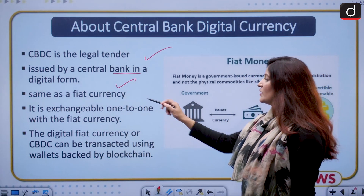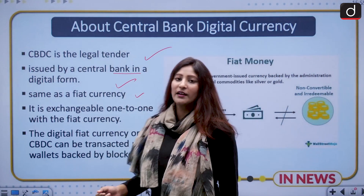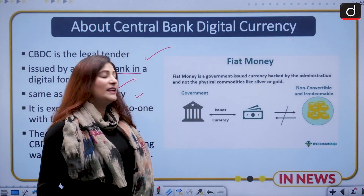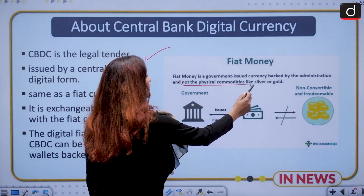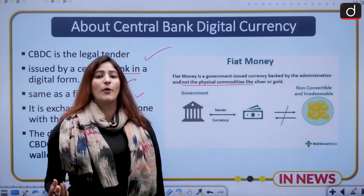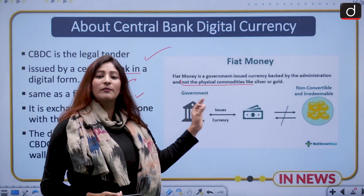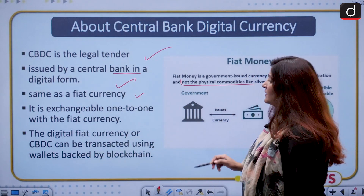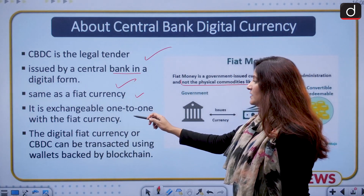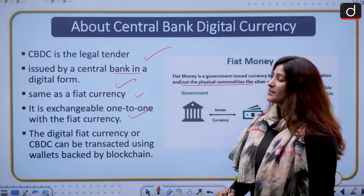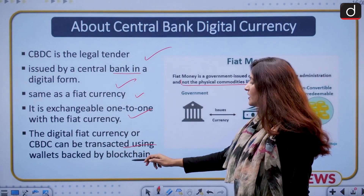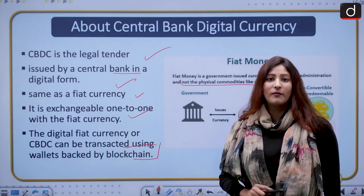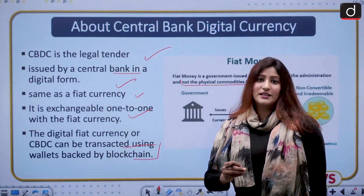CBDC is the same as fiat currency. Fiat money is a government-issued currency backed by the administration, not by a physical commodity like gold or silver. Its value is purely based on the concept that the administration backs it, making it acceptable throughout the country. The central bank digital currency is exchangeable one-to-one with fiat currency. The digital fiat currency or CBDC can be transacted through wallets backed by blockchain technology. I have a dedicated segment on blockchain technology, and I will provide the link in the description box.